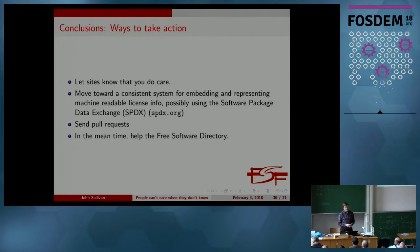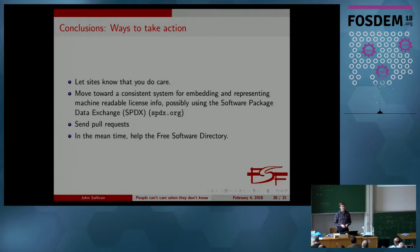I do want to acknowledge that getting copyright license information communicated doesn't really end the story here. There are lots of other risks that come to freedom along with downloading pieces of software. Getting the copyright license information communicated clearly won't necessarily help people understand the patent risk of the software they might be using. But it is a big step. And I think if we can fix this, we'll have something to build on in order to continue our process of growing and amplifying this movement — especially for non-technical and non-licensing-savvy people, which is frankly most of the people we need to talk to.